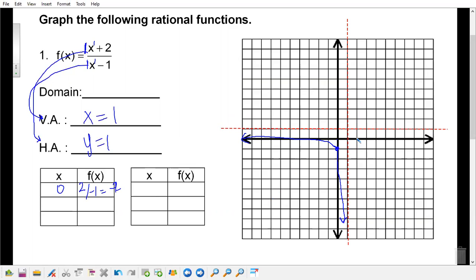I'm going to choose something on the right-hand side, so let's just go ahead and do two. If I substitute two in, two plus two is four, two minus one is one, so four divided by one is four. So I'm at two, four: one, two, three, four, and I'm going to kind of follow along.